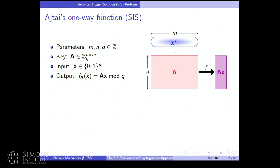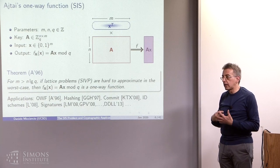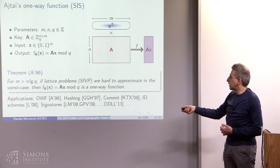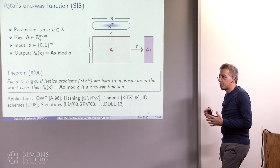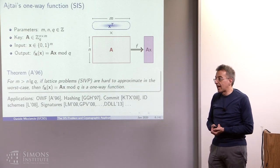In the discussion of dual lattices yesterday, you may remember that the kernel and the image of A are related by duality up to a scaling factor q. Reduction modulo q here corresponds to reduction modulo 1 in the previous geometric description of this function. Everything is done using integers, which allows for easier implementation.